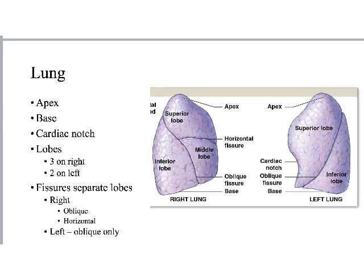Moving down from the trachea, right and left main stem bronchi, and hilum, we get into the actual lung tissue. Most of the lung tissue is composed of alveoli, with multiple branching tubes getting smaller and smaller. Looking at the gross anatomy of the lungs: there's an apex at the top, a base at the bottom, and a cardiac notch on the left lung because the heart shifts slightly left and needs space next to the left lung.